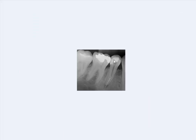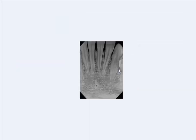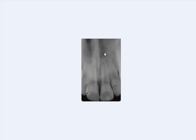From a periapical X-ray we can diagnose different types of diseases such as occlusal caries, proximal caries, root caries, and periodontal conditions such as alveolar bone loss. You can see here horizontal bone loss and we can also see vertical bone loss — the vertical loss of the alveolar crest or alveolar bone.